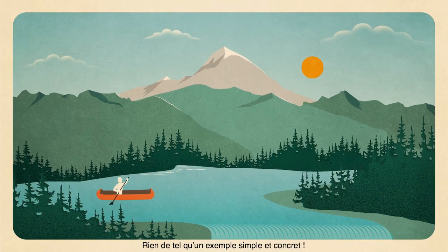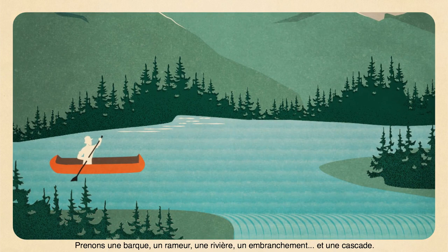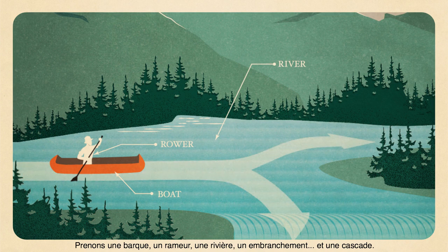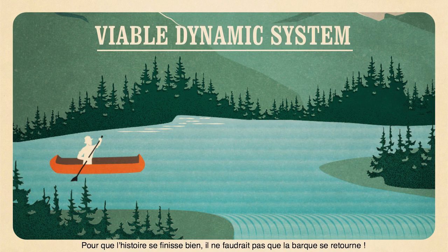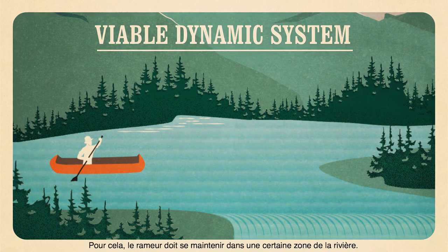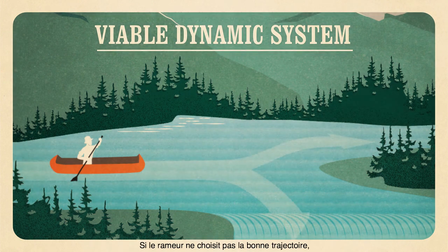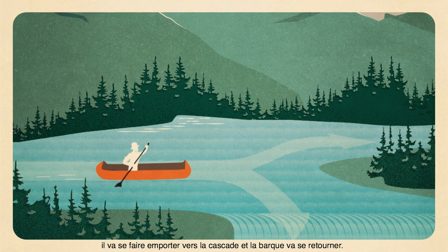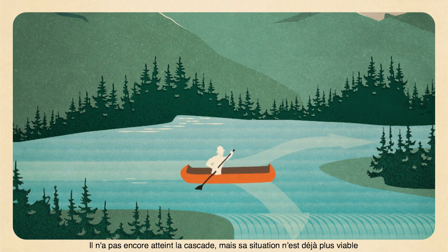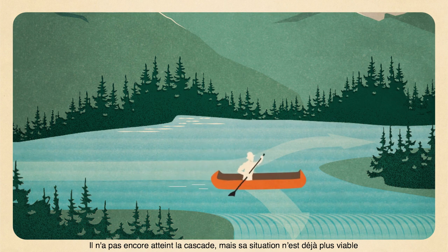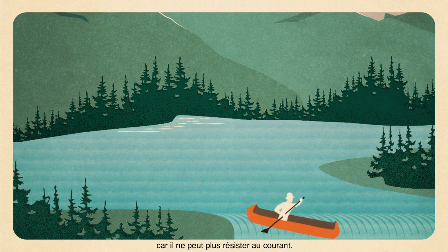It's still a little blurry? What we need is a simple, concrete example. Let's look at a boat, a rower, a river, a branch in the river, and a waterfall. For this to end well, the boat mustn't overturn. To keep this from happening, the rower needs to stay in a certain area of the river. If the rower doesn't choose the right path, he will be drawn toward the waterfall and the boat will overturn. He hasn't reached the waterfall yet, but now his situation is no longer viable because he can no longer resist the current.